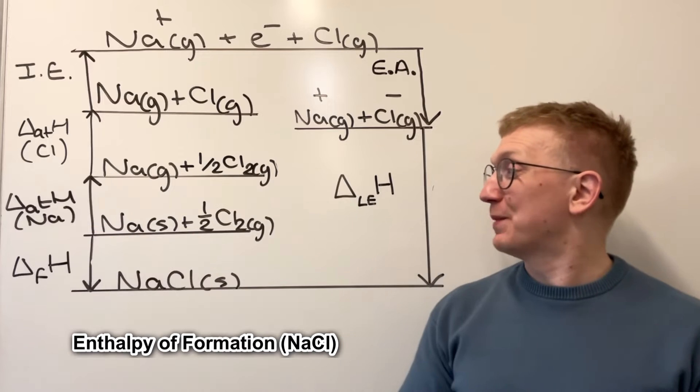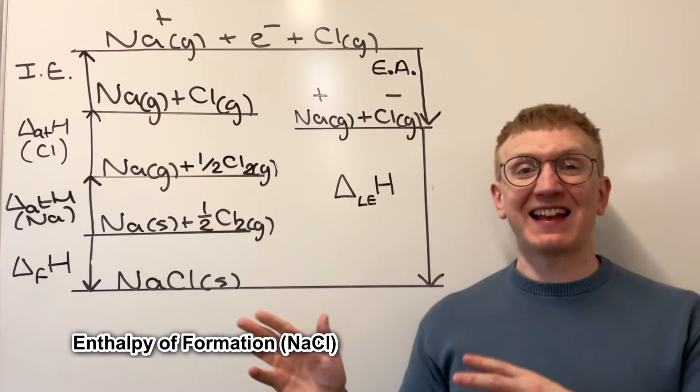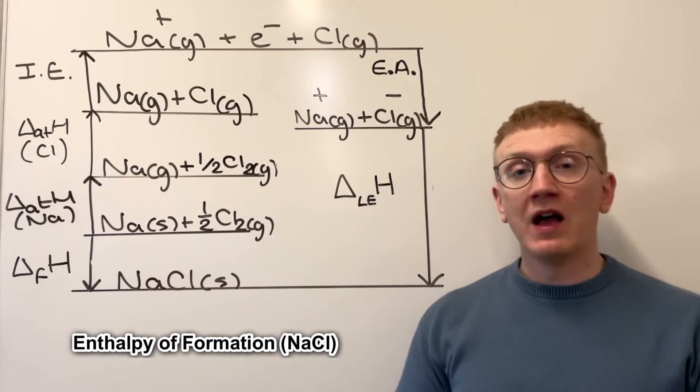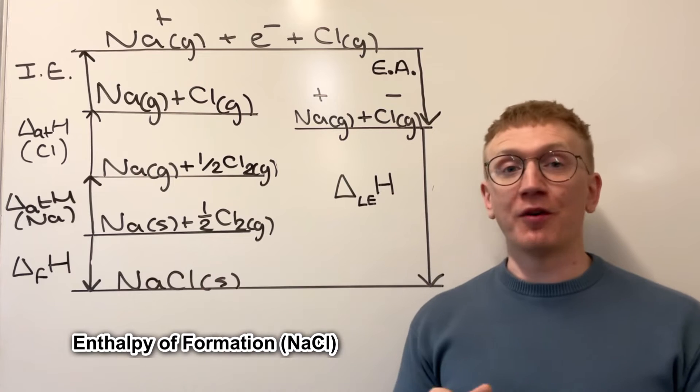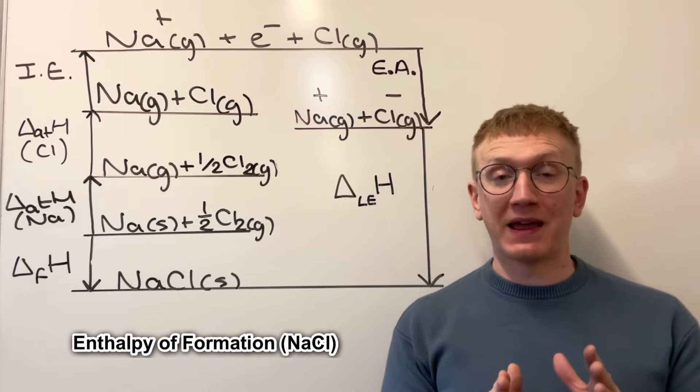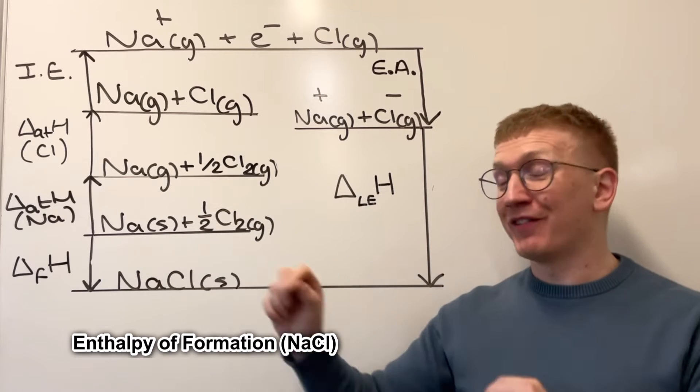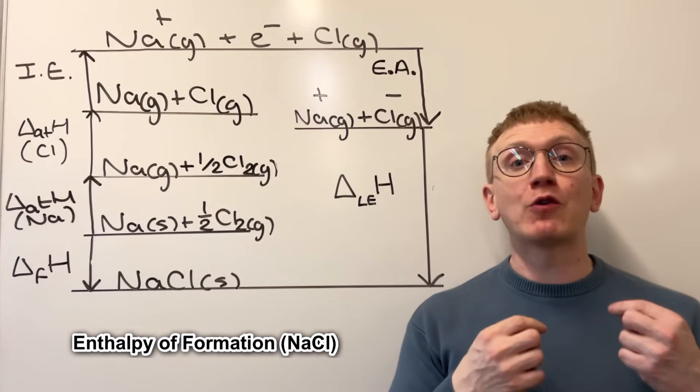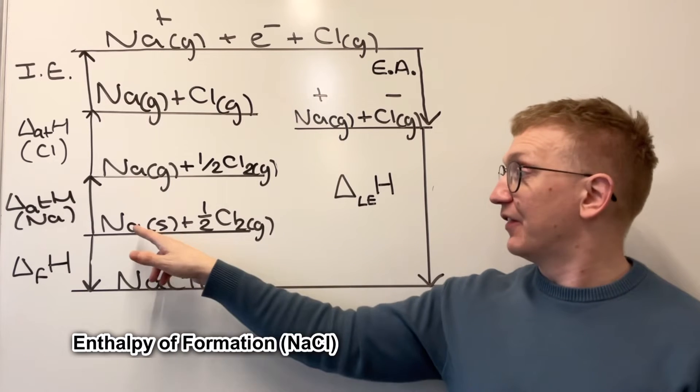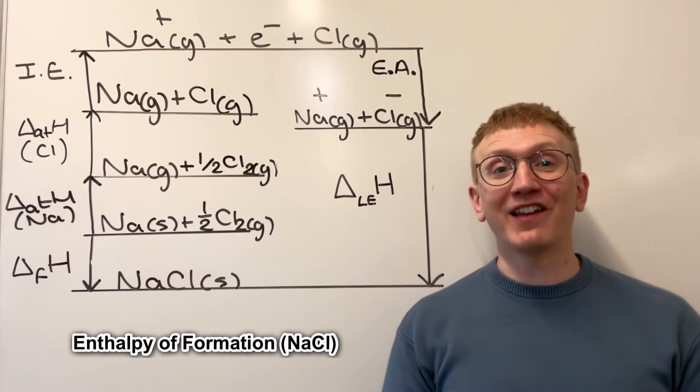We're starting off here with the enthalpy of formation for NaCl, and that's from its elements in their standard states. And that's one mole of our compound just there. We can see here that this one is exothermic, and the reason for that is best explained with bonds broken and bonds made. There's more energy given out when the bonds in the giant ionic lattice of sodium chloride are formed than is required to break the bonds in the giant metallic lattice of sodium and the simple molecular lattice of chlorine.